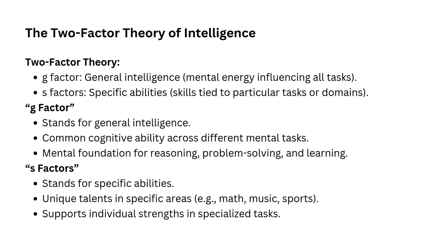These S-factors are unique to particular domains. For example, one person might have a high S for music, meaning they excel in musical tasks, while another person might have a high S for physical activities like sports. The S-factor is called specific because it is tied to particular skills or knowledge areas, unlike the general mental power that applies to all tasks. Think of the G-factor as the overall power source of a computer and the S-factor as the different software programs installed in it — each program has its own specialized purpose, but they all depend on the computer to function effectively.